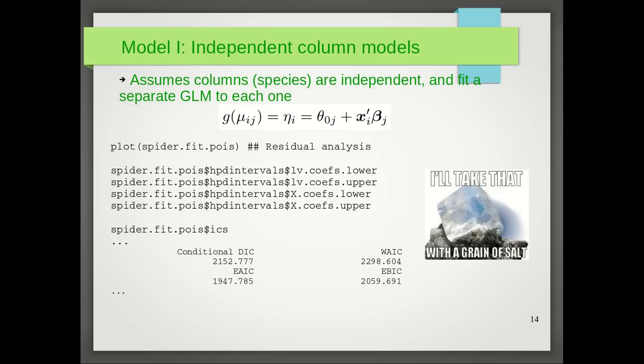What I will say about this model is that you should take these results and do inference in general with this model with a fairly large grain of salt. That's because we are assuming that these species are independent. This may not be a satisfactory assumption, and later on when I get to model 3, I'll talk about a way of trying to relax this assumption.